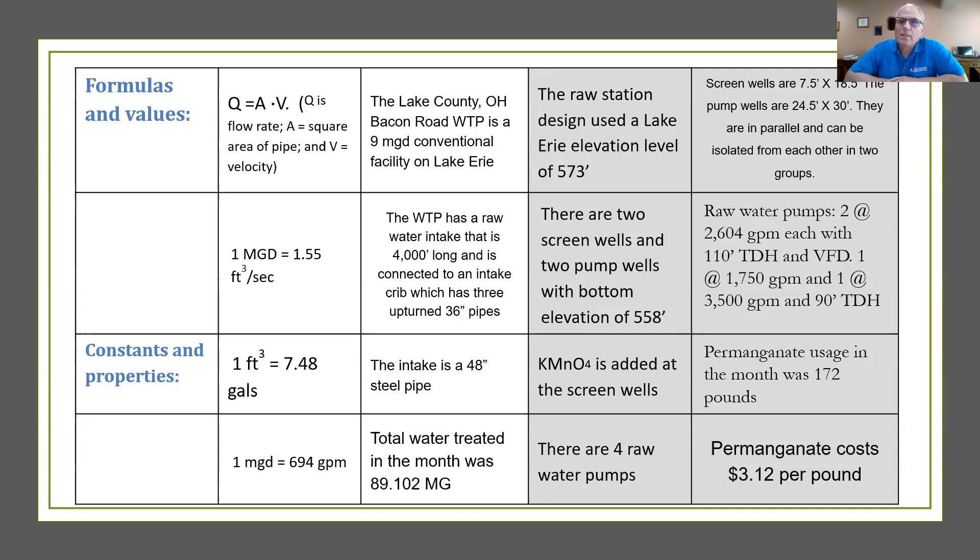Just like Aquarius, the Bacon Road plant adds potassium permanganate at the screen wells. There are four raw water pumps. We have the dimensions of the screen wells there you can see. Move my hand out of the way here. Screen wells are seven and a half by 18 and a half. The pump wells are 24 and a half by 30. They're in parallel and can be isolated from one another into two groups.